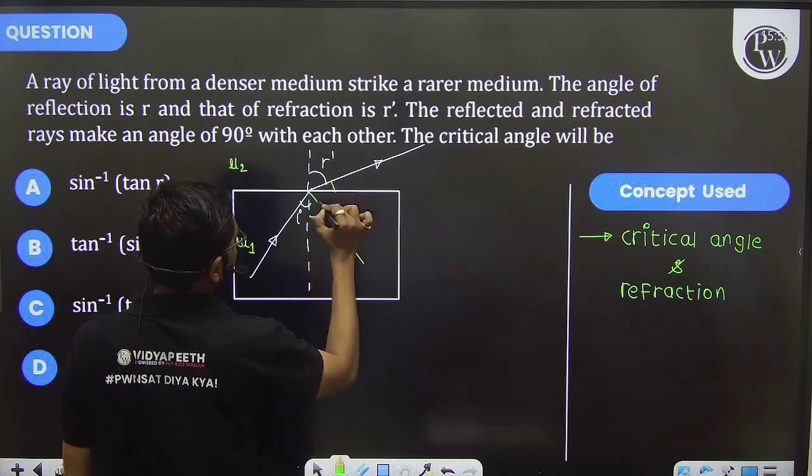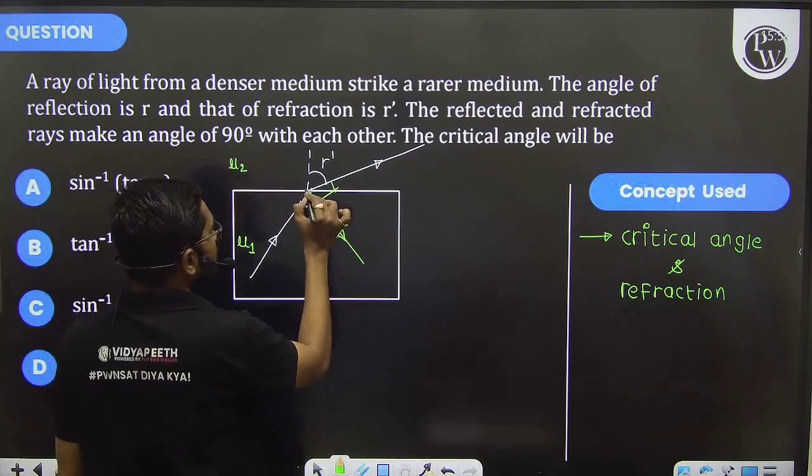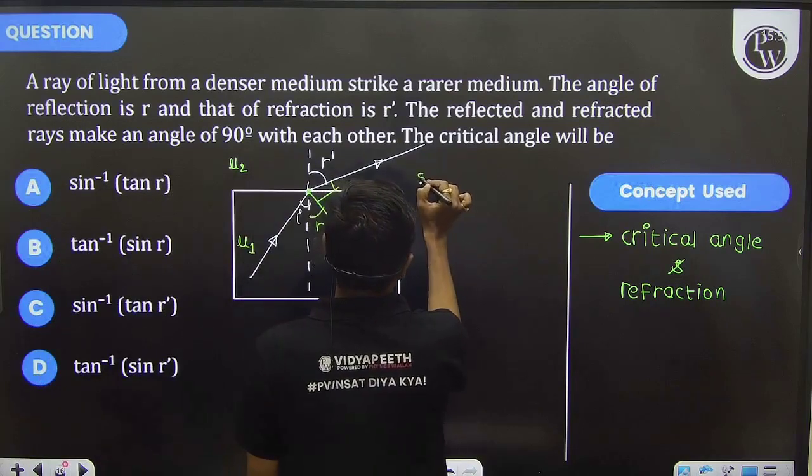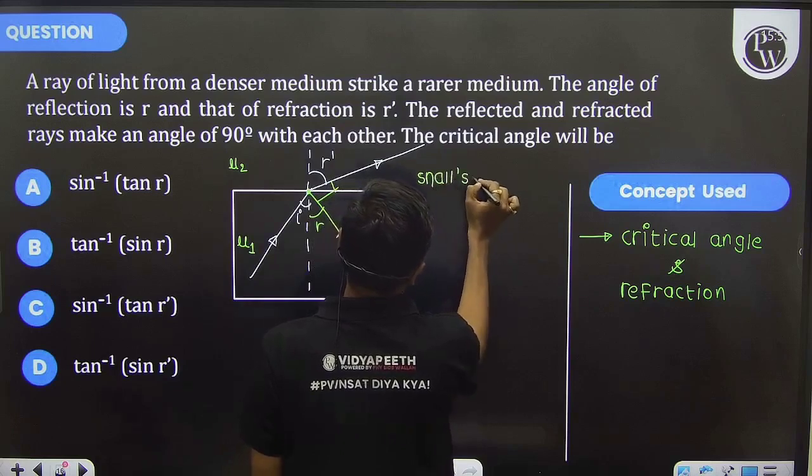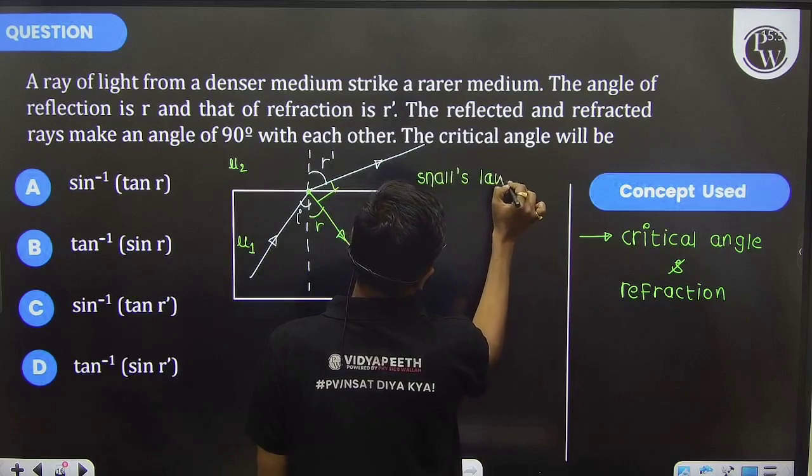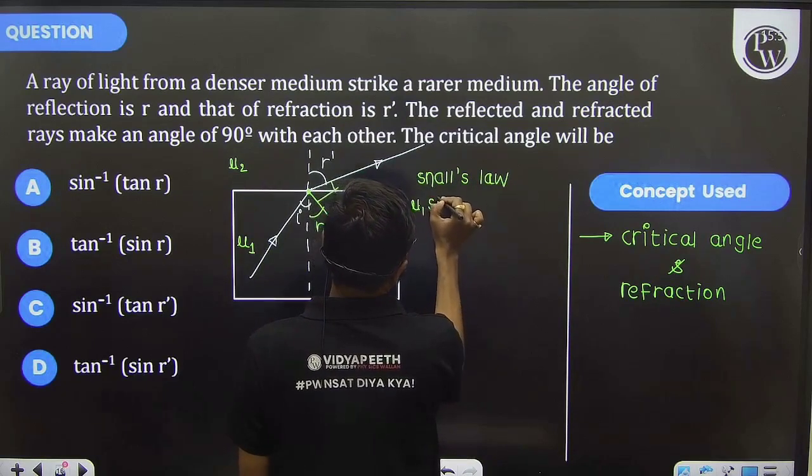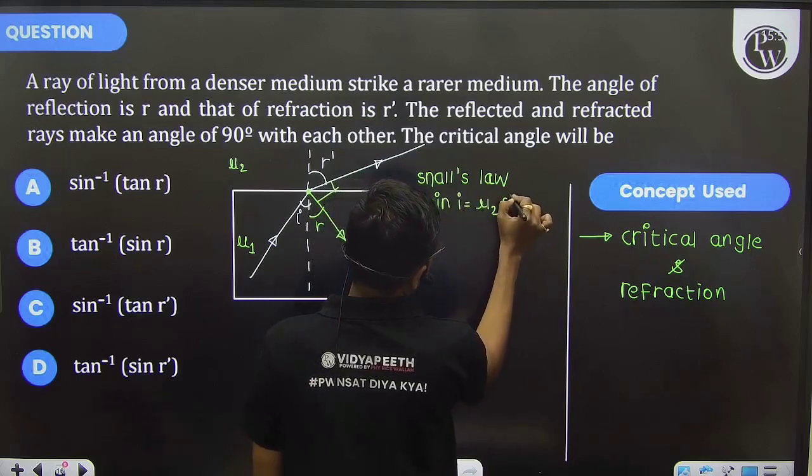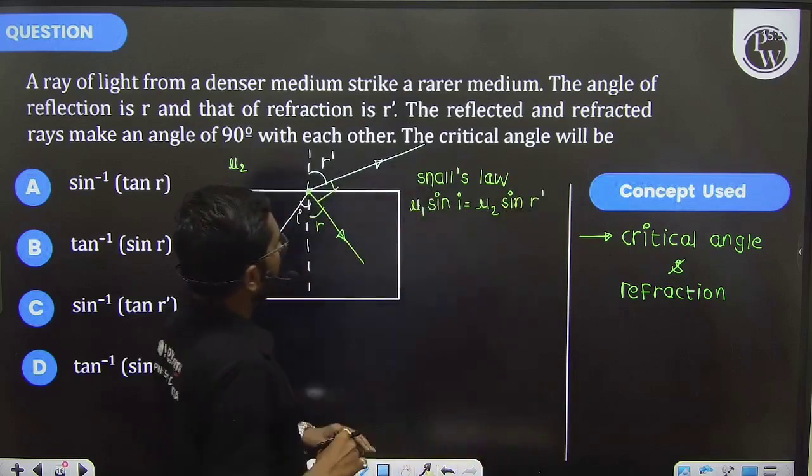Now if I use Snell's Law here, that is μ1 sin i equals μ2 sin r', and we need to find out the critical angle.